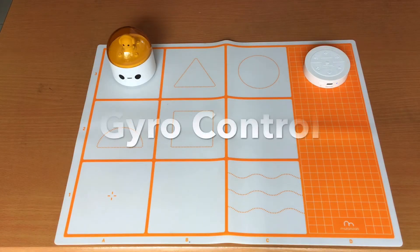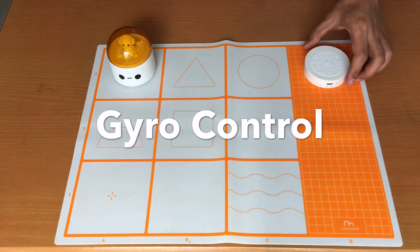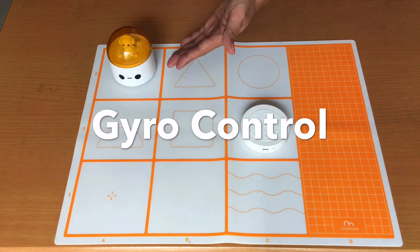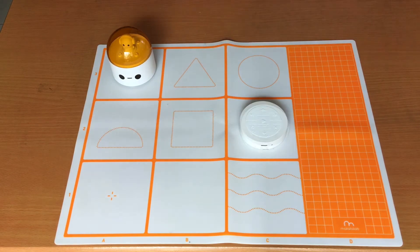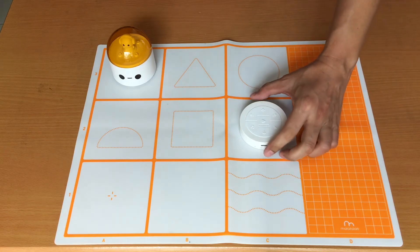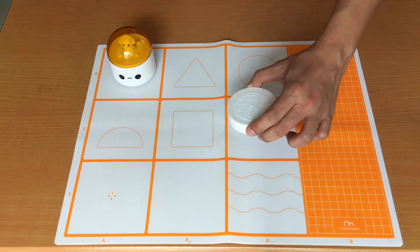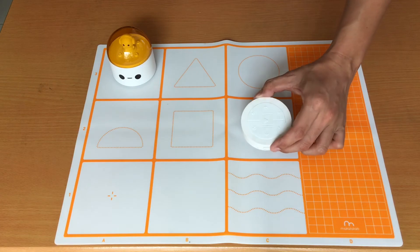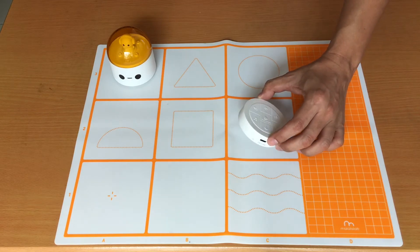So one of the features of Matatalab Lite is the gyroscope. This controller has a built-in gyroscope which allows freedom of movement for the Matatalabot. With the gyroscope feature of the Matatalab Lite, you can simply move the Matatalabot by tilting the controller. Tilting the controller forward will move the Matatalabot forward. Tilting it backwards will move the Matatalabot backwards. Tilting it to the left will turn it to the left. And tilting it to the right will turn the Matatalabot to the right.